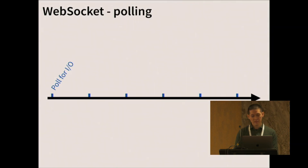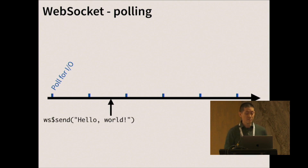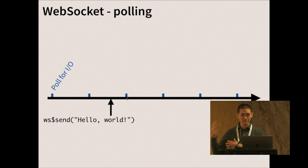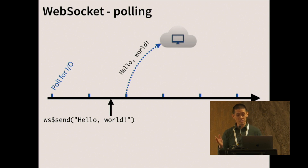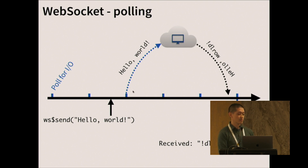Internally, this works using polling, similar to the data watcher we had before. We have this arrow representing time, and several times per second we're polling and checking for any input or output that has happened on this WebSocket. At some arbitrary point in time, in R, you might tell it to send a message — 'send hello world.' That puts it in the output queue, but the output queue isn't handled until the next polling event. When we get to the polling event, it calls out to a C++ library that handles all this I/O. It sends the message to the server, and the server sends a message back. That message sits in the input queue until the next polling event happens, at which point it calls the on-message handler and prints out the received 'hello world' reversed. The blue in this slide indicates what was triggered by the polling event that Later provided.